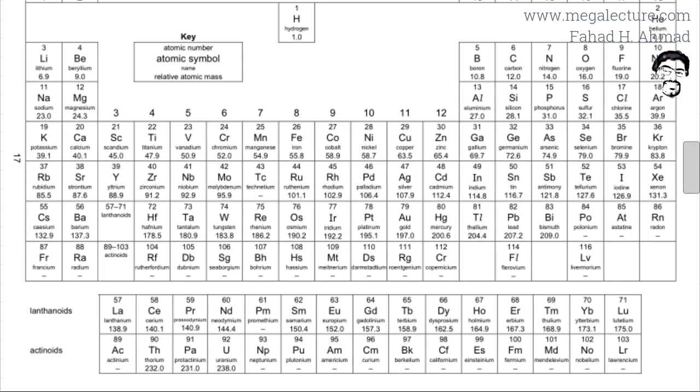Remember electronegativity or the tendency for an atom to gain electrons increases to the right. The reason why it increases to the right is that the number of protons increases. Sodium has 11 protons so the attraction for electrons is not very great.